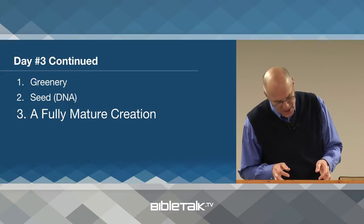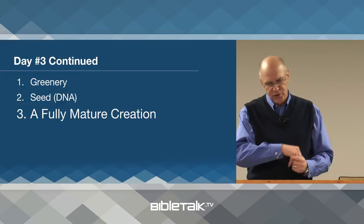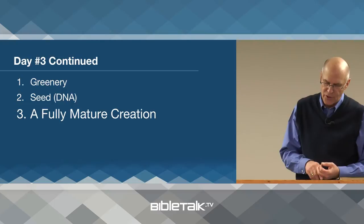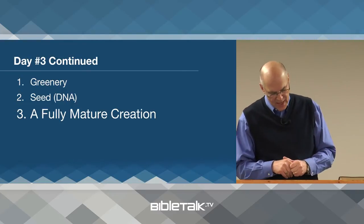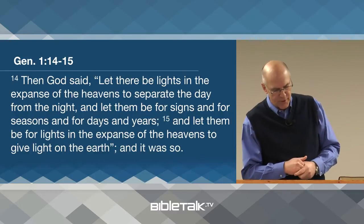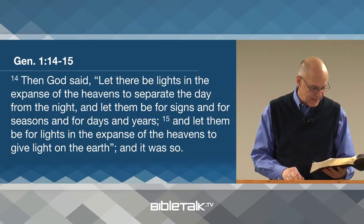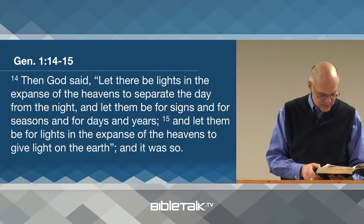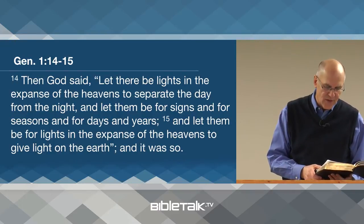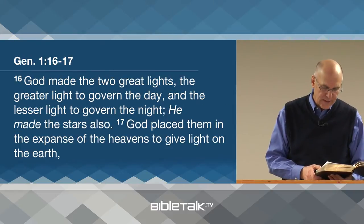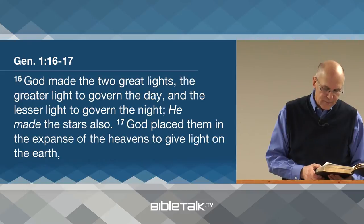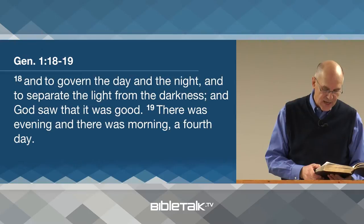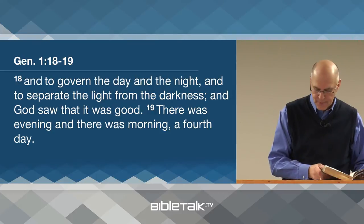So with the creation of the vegetation and plant world, there's a close of the third day. Again, the context and the grammar used a single dark-light cycle of what we know as 24 hours. Alright, so let's look at day number four. It says: 'Then God said, Let there be lights in the expanse of the heavens to separate the day from the night. And let them be for signs and for seasons and for days and years. And let them be for lights in the expanse of the heavens to give light on the earth. And it was so. God made the two great lights — the greater light to govern the day, and the lesser light to govern the night. He made the stars also. God placed them in the expanse of the heavens to give light on the earth, and to govern the day and the night, and to separate the light from the darkness. And God saw that it was good. There was evening and there was morning, a fourth day.'